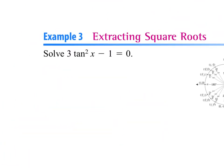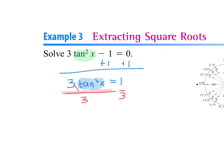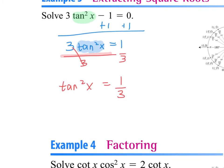This next one is a little different because it has a squared. But again, the only thing I care about is solving for the trig function. I want tangent squared of x by itself, so I add 1 to both sides: 3 times tangent squared of x equals 1. Divide by 3: tangent squared x equals 1/3. The opposite of squaring is taking the square root, so I take the square root of both sides.